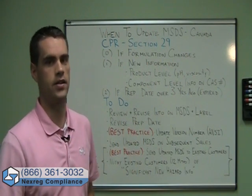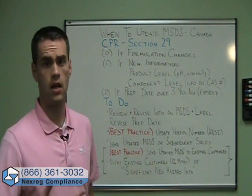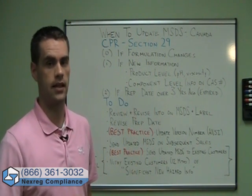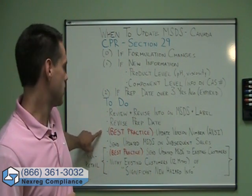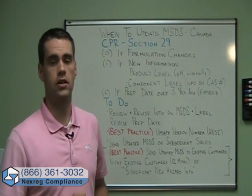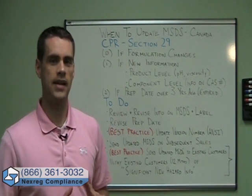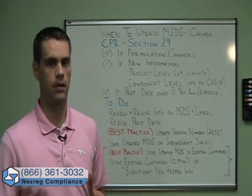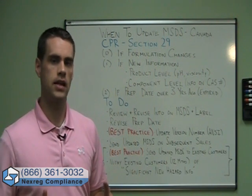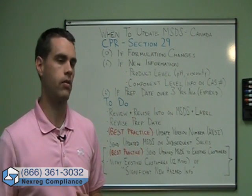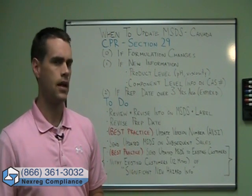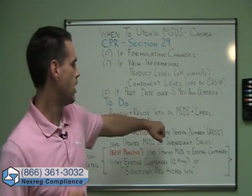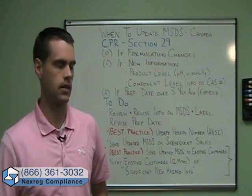Second, you're going to need to revise the preparation date. Anytime you make a change to your MSDS, you should be revising your date of preparation. Third — this isn't required but I would call it a best practice — is to update the version number on your MSDS. Ideally your MSDS should have a version number like 1.0 or 1.1. If you make a change, you should create a higher version number to indicate this is a newer version. This isn't required under the CPR, but it is in the ANSI guidelines.